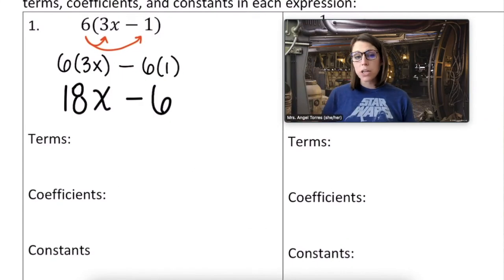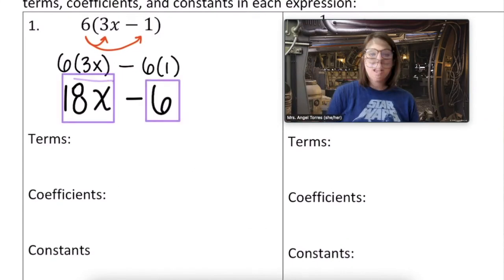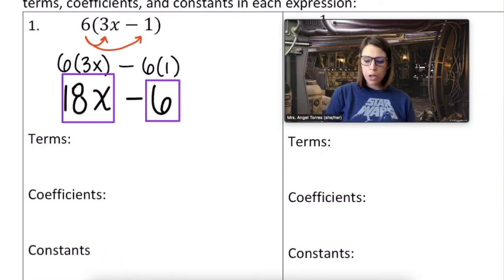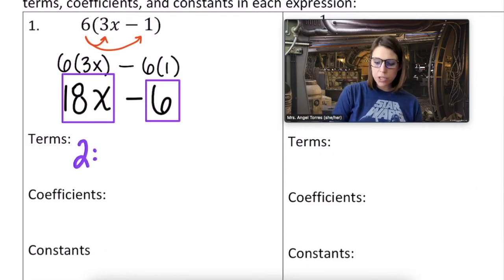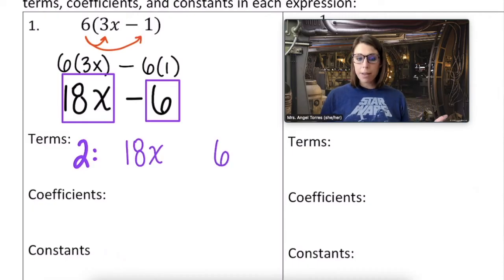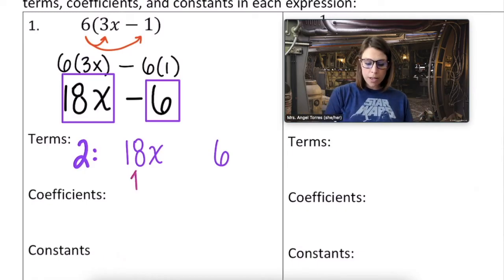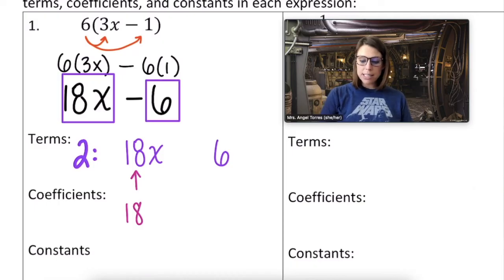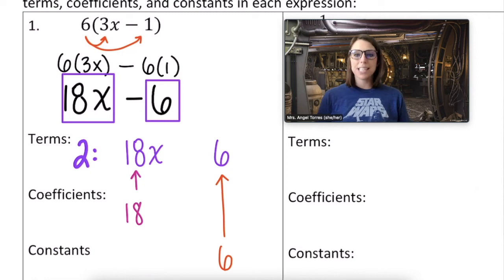So now that I have my new expression, how many terms are there? I count 2. There are two terms in this expression, and they are 18x and 6. All right, what's our coefficient? What's attached to our variable? You got it. 18. And what's our constant standing all on its own with no variable? Our 6.